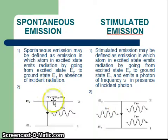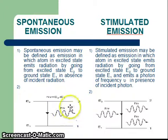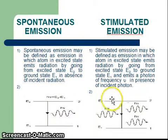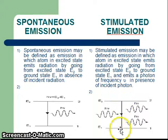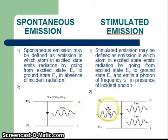The second difference is that you can draw a diagram in which the atom goes from E2 to E1 by emitting one photon in the case of spontaneous emission, whereas in the case of stimulated emission the atom goes from E2 to E1 by emitting two photons in the presence of an incident photon. Just draw this diagram as the second point.